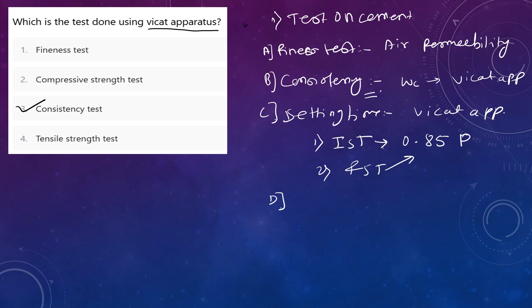Fourth is compressive strength. This requires water content P/4 plus 3%. Fifth is tensile strength test. Here, the water content is P/5 plus 2.5%. This test is also conducted in Vicat apparatus.